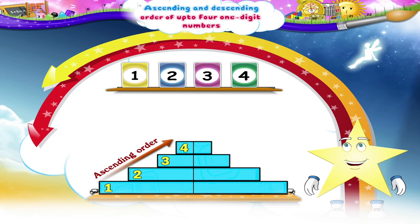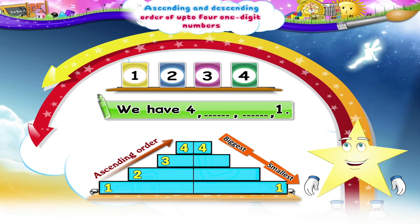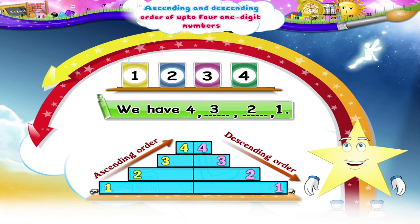For the descending order, we take the biggest number first and then the smallest. So, four, dash, dash, one. Between three and two, three is the bigger number. We get four, three, two, one — the arrangement in descending order.